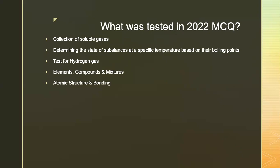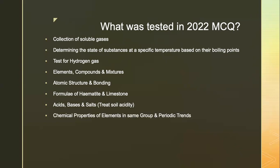Atomic structure and bonding. Formula of hematite and limestone. Acid, bases and salts — in particular, how to treat soil acidity. Chemical properties of elements in the same group and periodic trends, like the increased reactivity down Group 1.